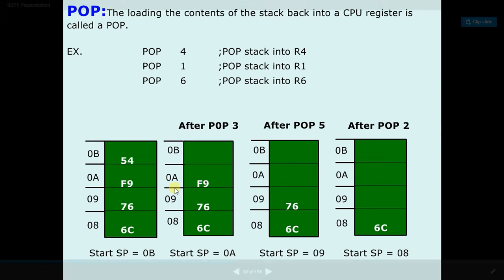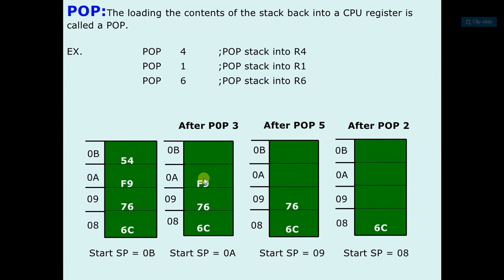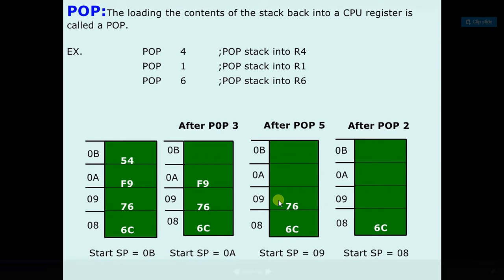Now if we type POP 1 or POP 5, any of the register, it will copy the F9 data to the R5 or R1 register. So now the stack pointer is decremented by 1, so now the location is 09 for POP.